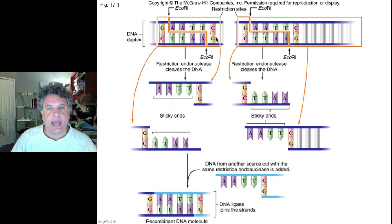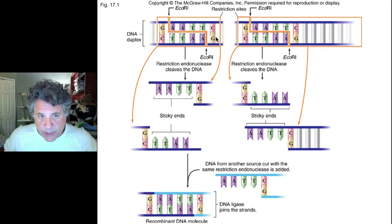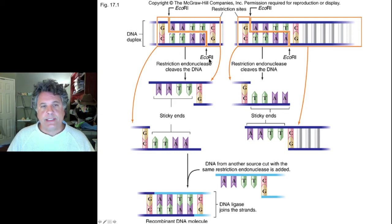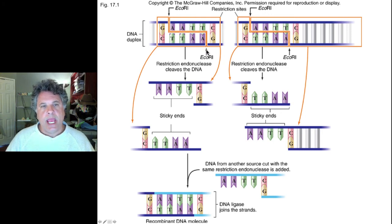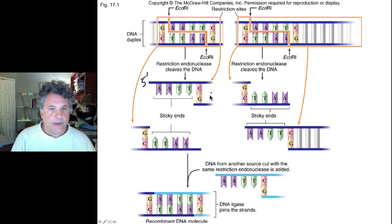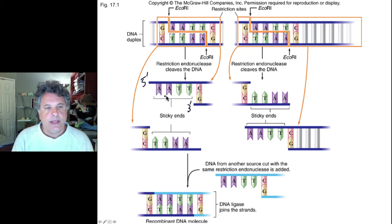Each restriction enzyme has its own particular nucleotide sequence recognition site. In this case, the restriction enzyme EcoR1 from E. coli will cut the sugar phosphate backbones of double helical DNA in an asymmetric fashion whenever a sequence of GAATTC is found on one strand and CTTAAG on the other strand. It cuts that DNA in such a way as to produce overhangs — specifically a 5' overhang of single-stranded DNA at the cut site.